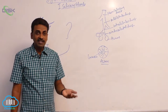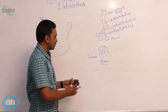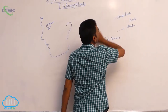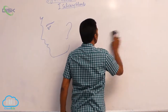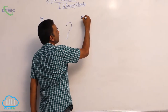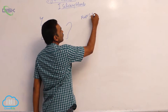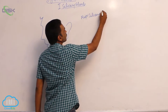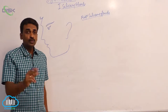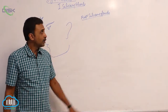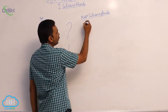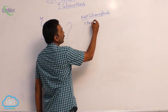We have major salivary glands and minor salivary glands. Salivary glands are of two types: major and minor. We will first see the major salivary glands, which includes the parotid glands.